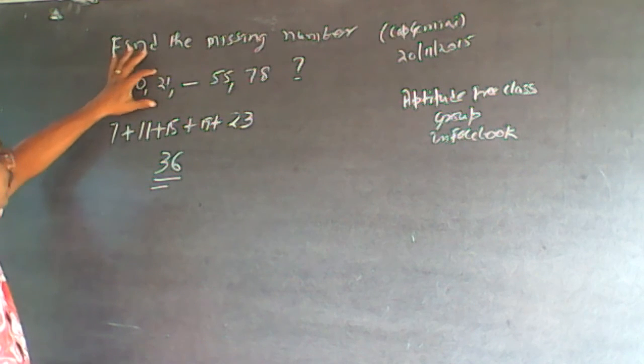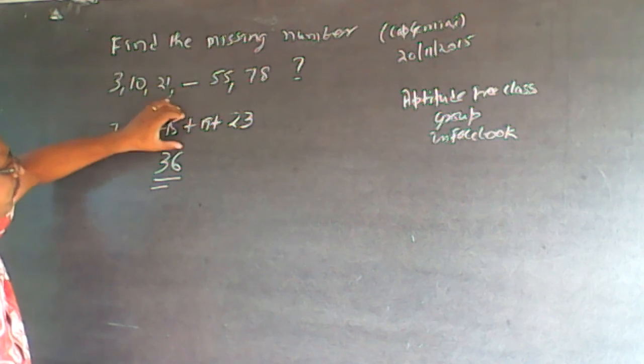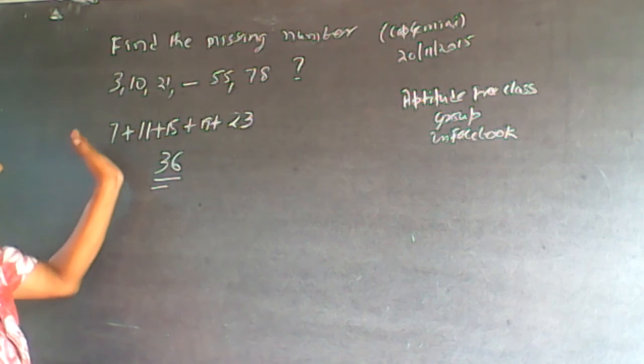Plus 7, plus 11, so it is increasing by 4. I make it as plus 15, I check it as 36. Then after that, I add 19 to become 55, plus 23. So the pattern is increasing by 4.